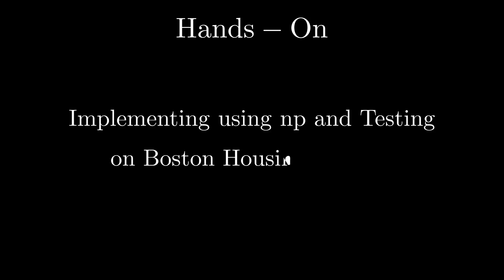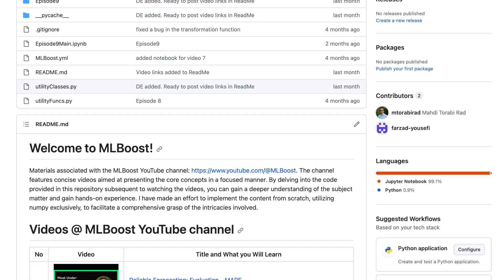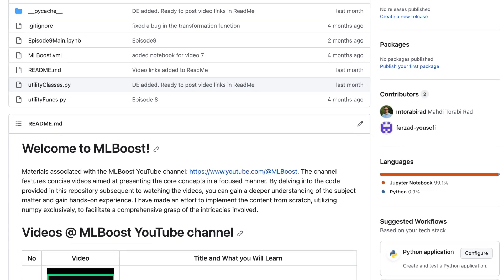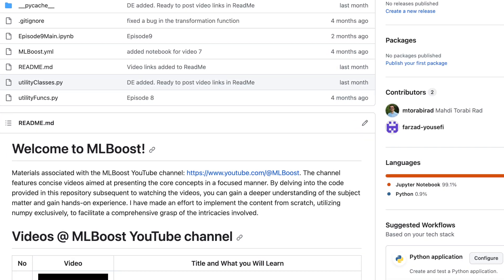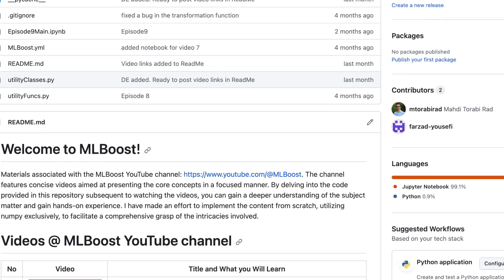Now that we have dived deep into the world of split conformal methods and understood what these methods do, it's time to put our knowledge into action. In the upcoming segment, we will go through a Python code to see how to implement split conformal methods using NumPy only and test it on the Boston housing dataset. We can find the notebook for this on the channel's GitHub page, link in the descriptions section of the video.